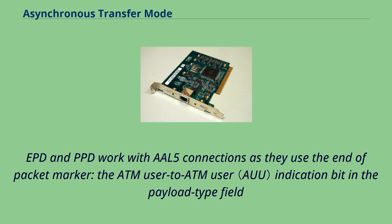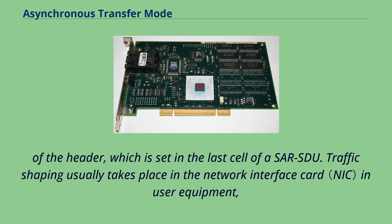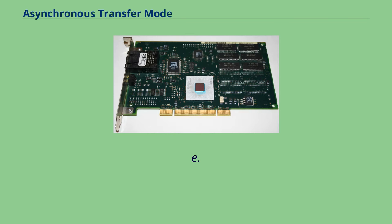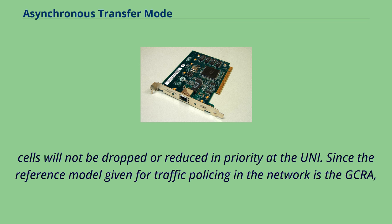The end-of-packet marker is set in the last cell of a SAR-SDU. Traffic shaping usually takes place in the network interface card and user equipment, and attempts to ensure that the cell flow on a VC will meet its traffic contract — i.e., cells will not be dropped or reduced in priority at the UNI. Since the reference model given for traffic policing in the network is the GCRA, this algorithm is normally used for shaping as well, and single and dual leaky bucket implementations may be used as appropriate.